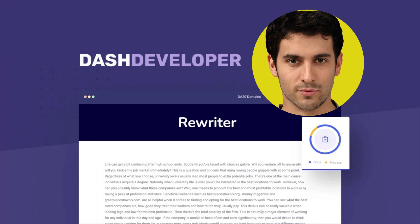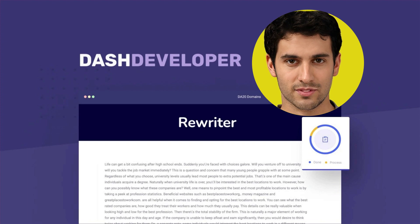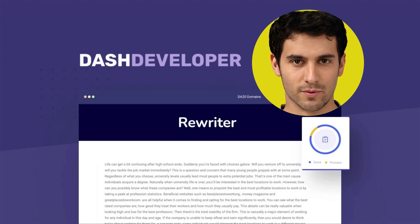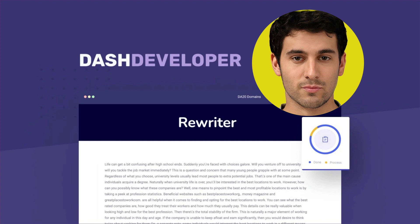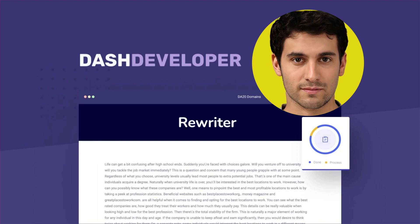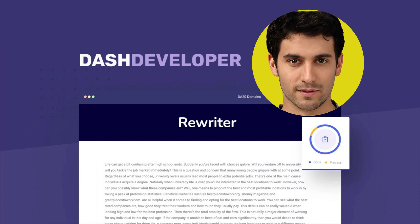Are you tired of dealing with duplicate content penalties from Google? Do you want a simple solution that will help you eliminate the dreaded penalty from your WordPress website? Introducing Dash Rewriter, the go-to plugin for WordPress users looking to rewrite their content without any hassle. This easy-to-use plugin automatically rewrites your content for you, allowing you to easily avoid any duplicate content penalties.